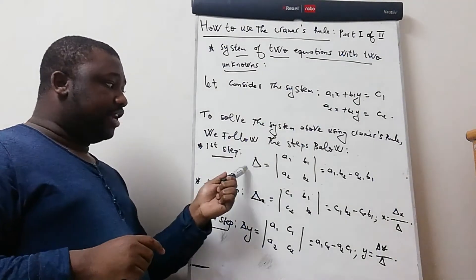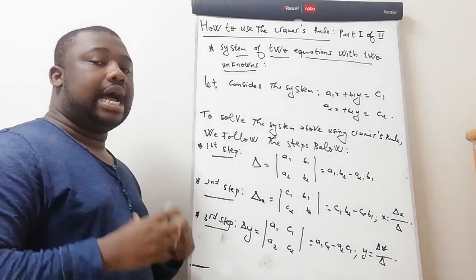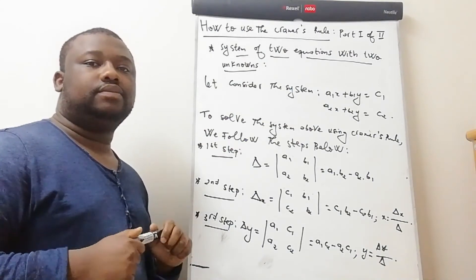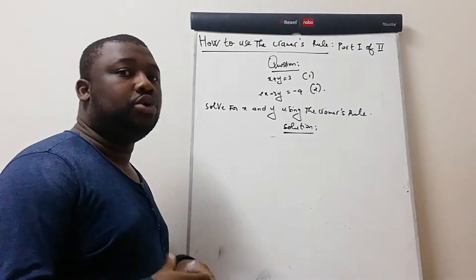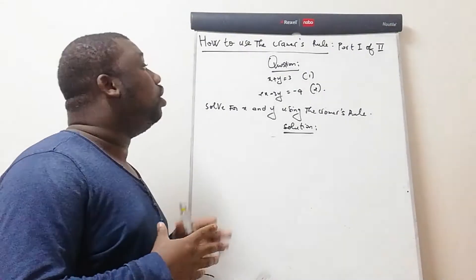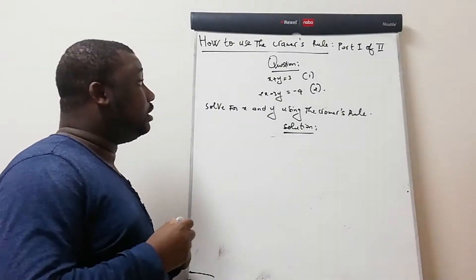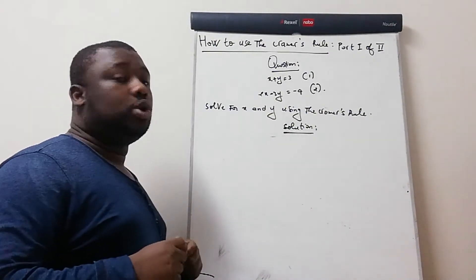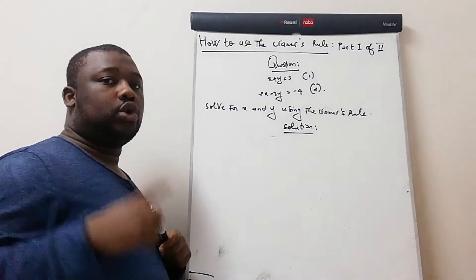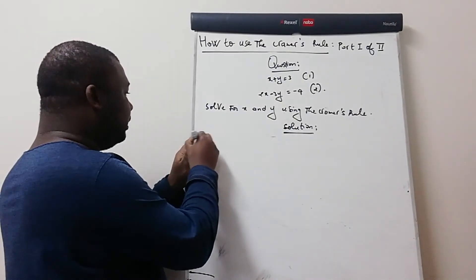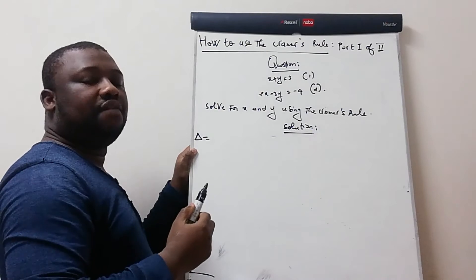Now that you know how to find Delta, Delta x, Delta y, and solve for x and y, here is the question we're going to solve. Equation 1: x + y = 3. Equation 2: 2x − 3y = −4. The question asks you to solve for x and y using Cramer's Rule. The first thing to do is find the determinant of the whole system — we copy the coefficients in front of the variables from the first member of the equations.